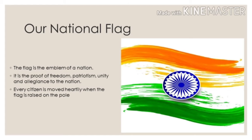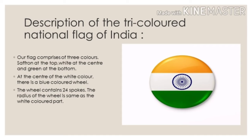Our National Flag — the flag is the emblem of a nation. It is a proof of freedom, patriotism, unity and allegiance to the nation. Every citizen feels moved when the flag is raised on the pole. Our tricolor national flag of India comprises three colors: saffron at the top, white at the center, and green at the bottom. At the center of the white stripe, there is a blue-colored wheel. The wheel contains 24 spokes, and its radius is the same as the width of the white stripe.